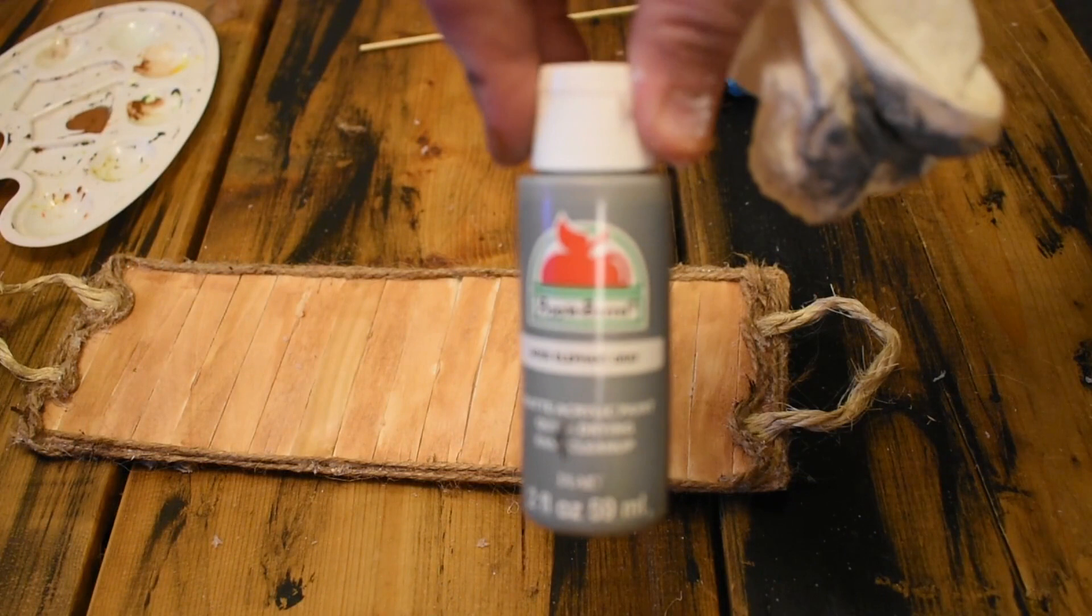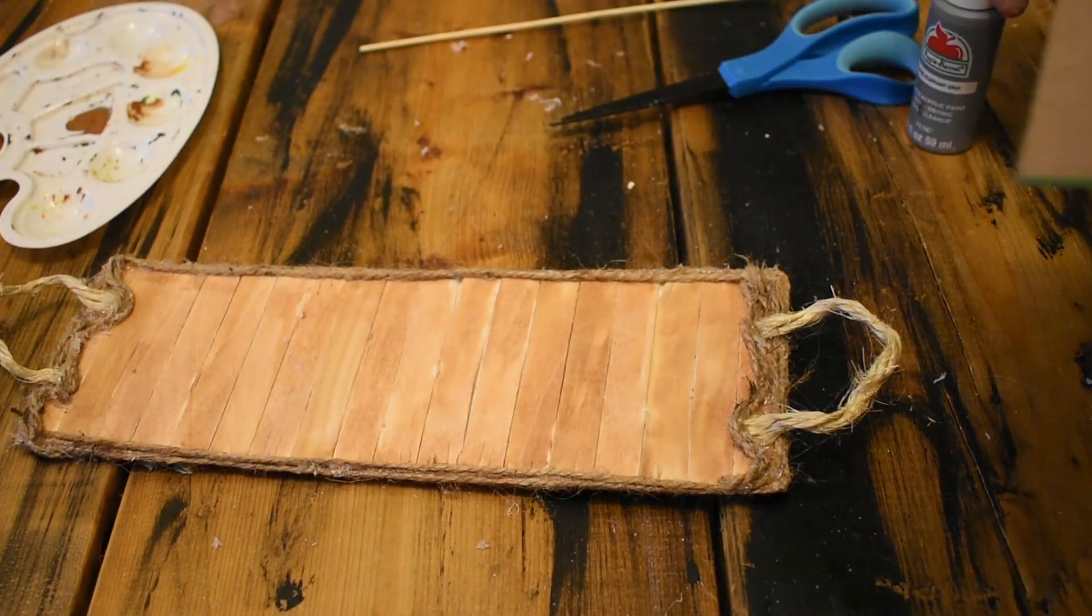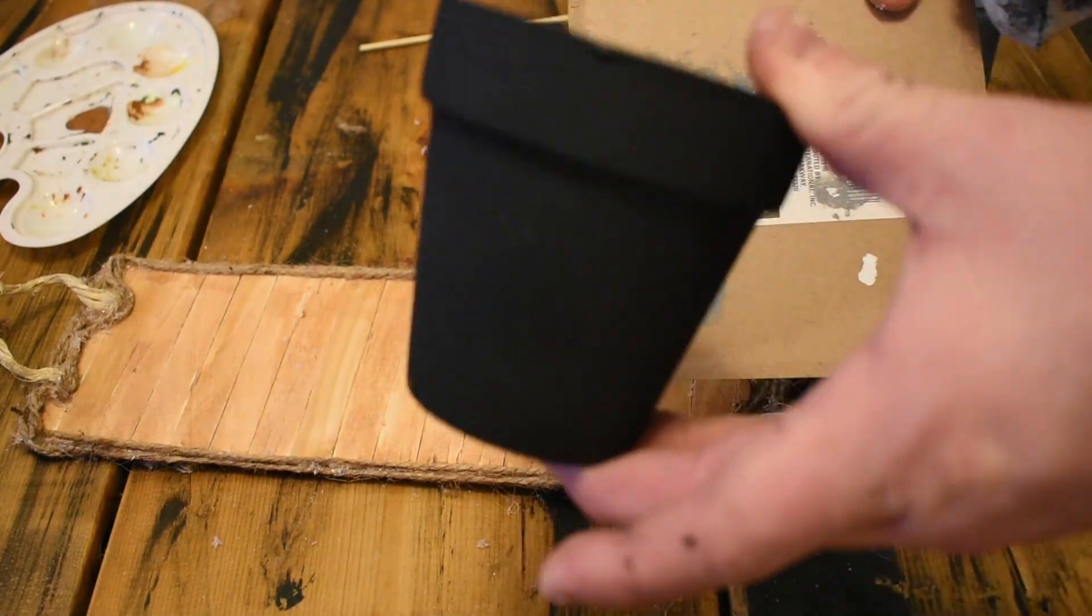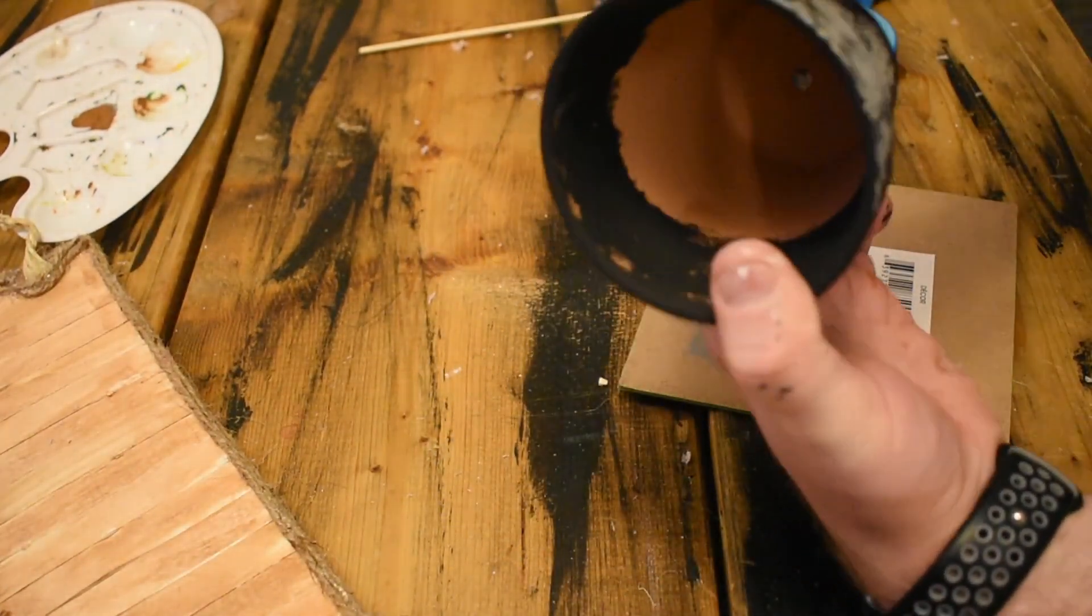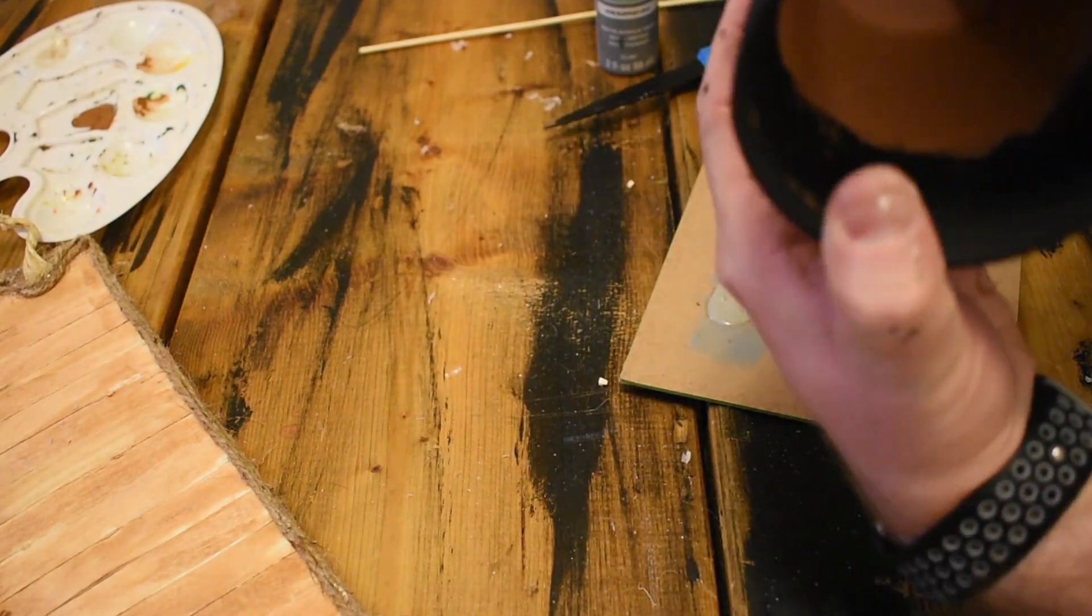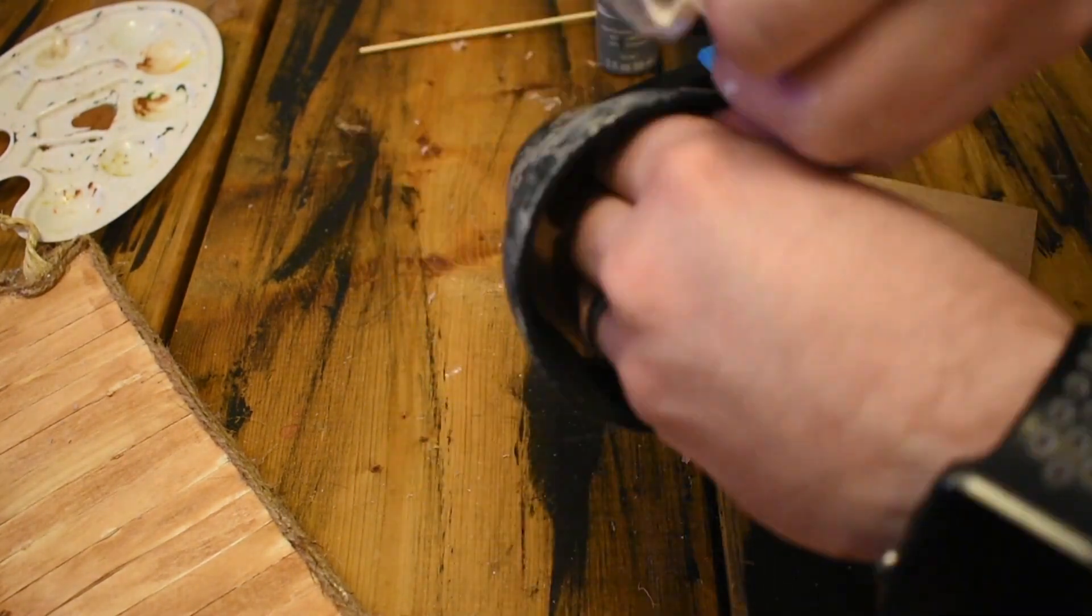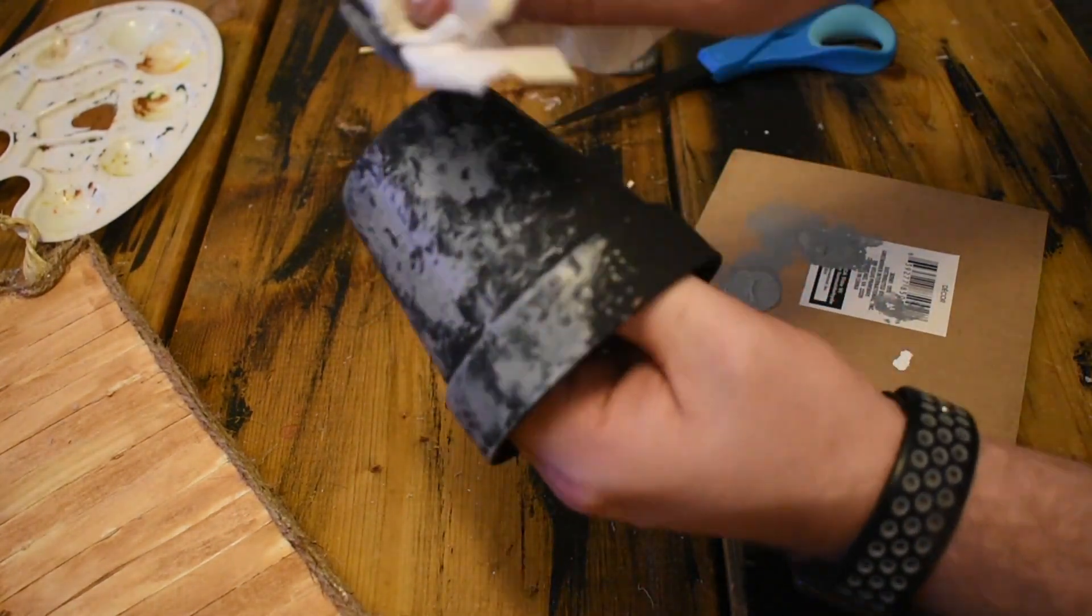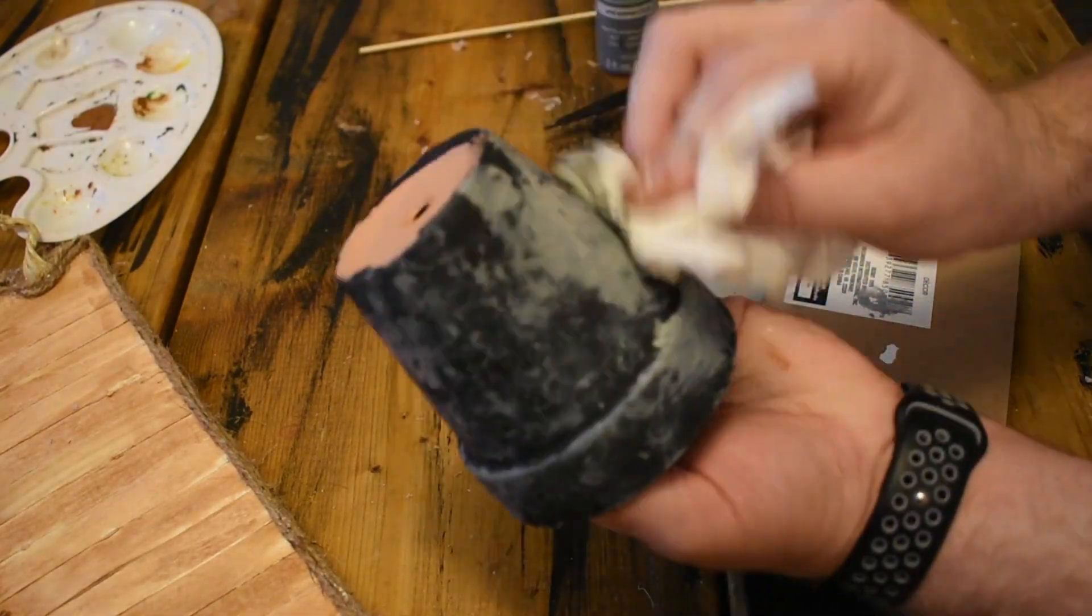Next, you're going to take your gray paint and you're going to dab it with a napkin, and you're just going to start dabbing it onto your ceramic planter so that way you get that gray into it. Once you finish, then you're going to take spray paint, that metallic spray paint, and you're going to put it into a container, dip that napkin back into it, and then blot it on the ceramic planter again to give it a galvanized look.